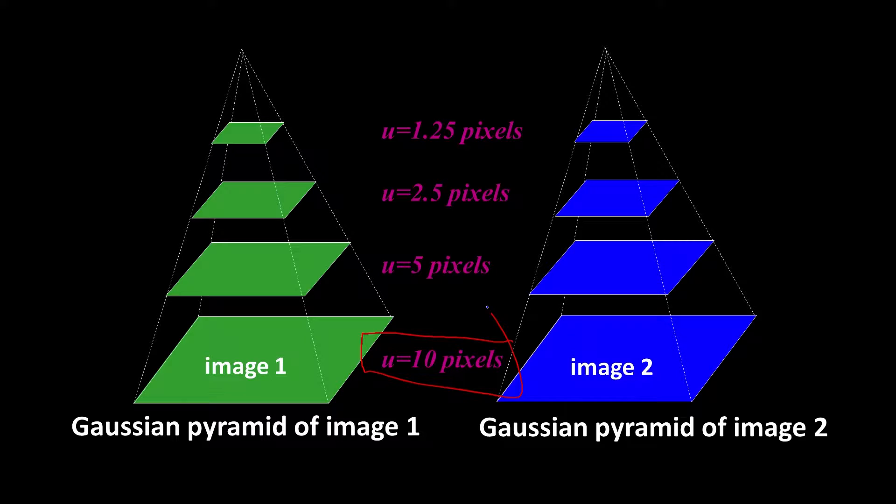So here it says U is 10. That's saying let's suppose the shift is 10 pixels at the lowest level. Well, when I cut it in half, it becomes five. Then it becomes two and a half. Then it becomes one and a quarter. I could keep going. So this is how I reduce the amount of motion that's present.